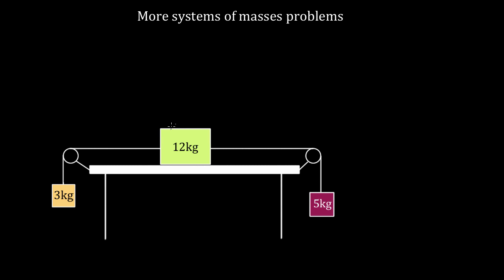Check out this problem. You've got a 12 kilogram mass sitting on a table. On the left-hand side, it's tied to a rope that passes over a pulley, and that rope gets tied to a three kilogram mass. On the right side of this 12 kilogram box, you've got another rope that passes over another pulley on the right, and it's tied to the five kilogram box. There's also a coefficient of kinetic friction between this 12 kilogram box and the table of 0.1.